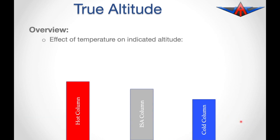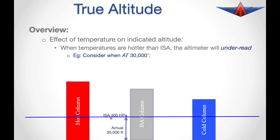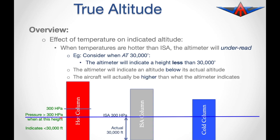Temperature has an effect on indicated altitudes. When temperatures are hotter than ISA, the altimeter will under-read. For example, at 30,000 feet in ISA conditions the pressure is 300 hectopascals, but on a hot day 300 hectopascals is higher up. So if we are at 30,000 feet, the pressure at our altitude will actually be more than 300 hectopascals, and the altimeter would indicate that we are below 30,000 feet. In other words, the aircraft is higher than what the altimeter indicates on a hot day.